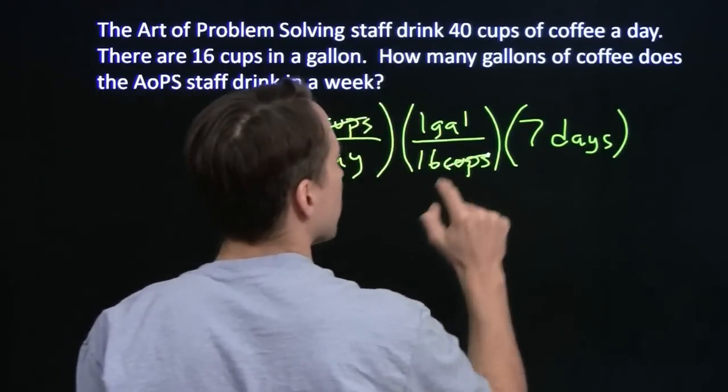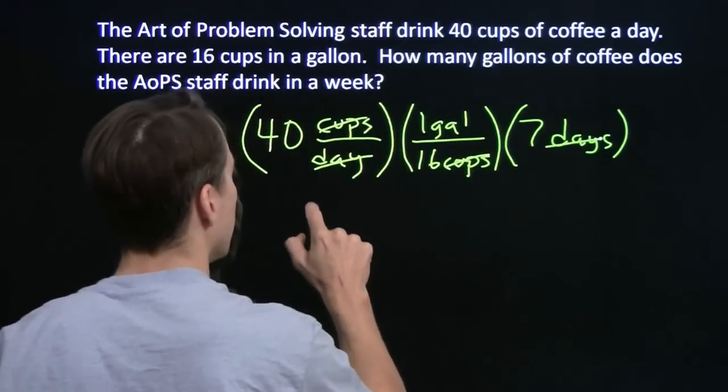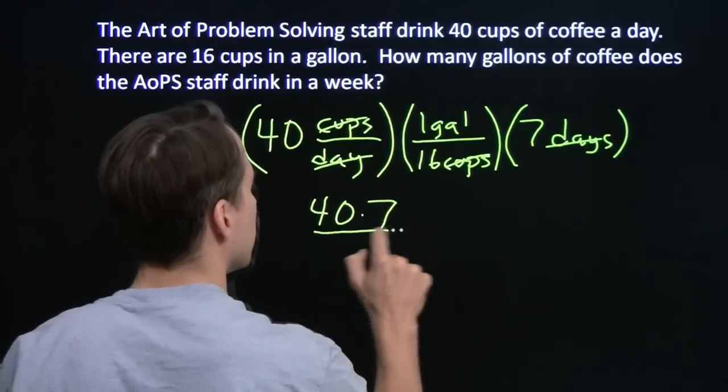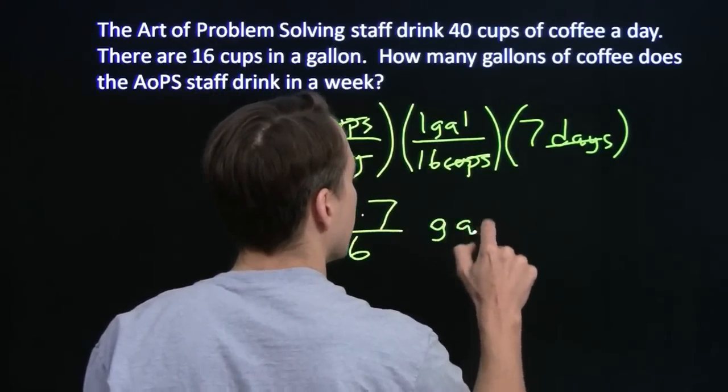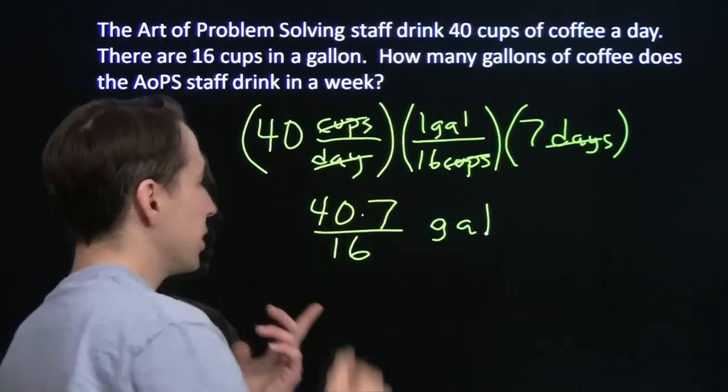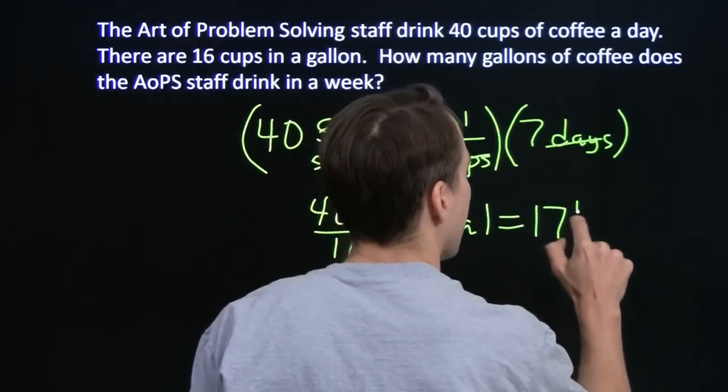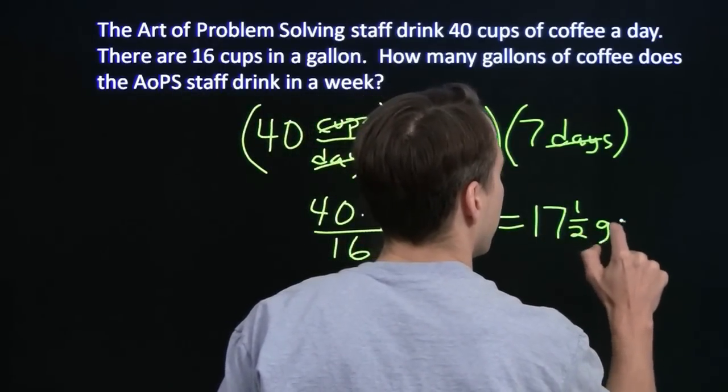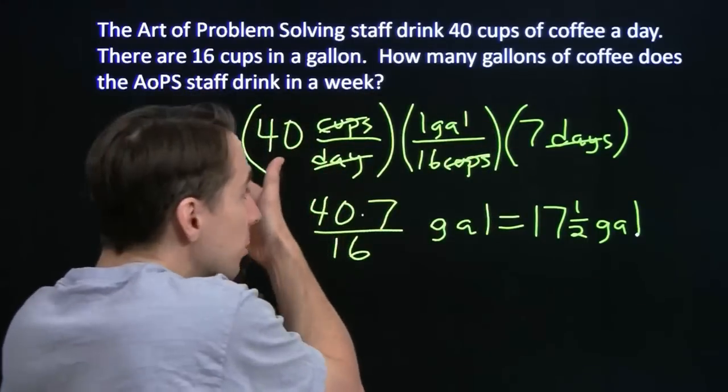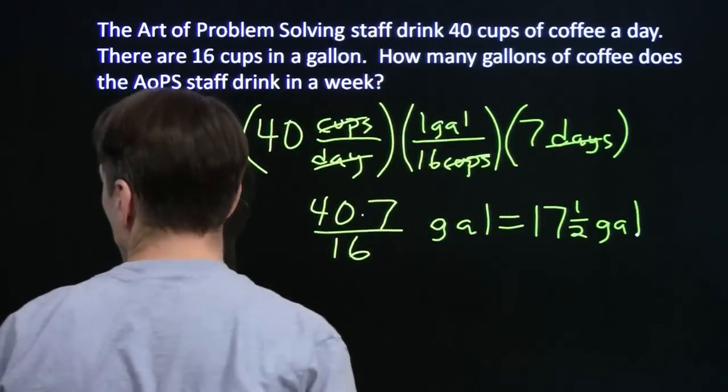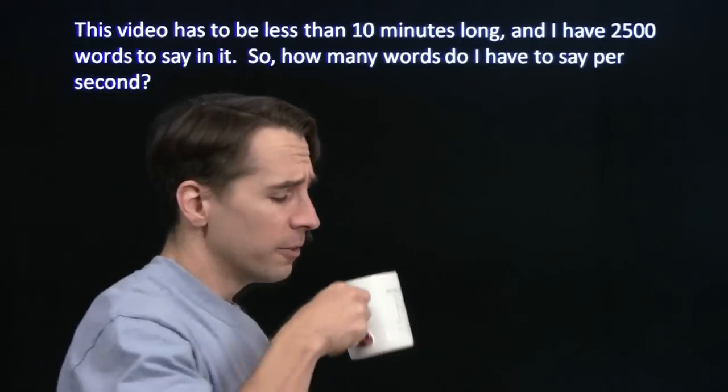And sure enough, the cups cancel out. The days cancel out, and we're left with 40 times 7 divided by 16, and the only unit left here is gallons. And of course, once again, 40 times 7 is 280. 280 over 16, we already computed that, is 17 and a half gallons. So these rate problems, we can think of them simply in terms of conversion factors if we want to. Let's try another one. Let me have a little more coffee first.